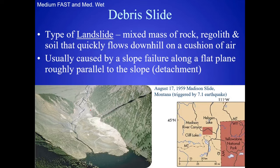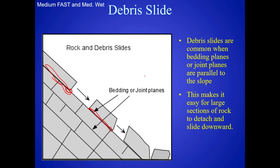Debris slides are usually caused by a slope failure along a flat plane roughly parallel to the slope detachment. This happens a lot in sedimentary rocks that formed in beds. When the bedding planes are parallel to the slopes, it's a very dangerous situation, because it's very easy for whole sections of that mountain to cleave off along those bedding planes and slide downhill. That's called a debris slide.